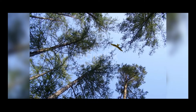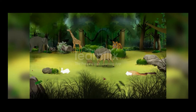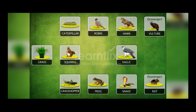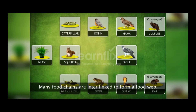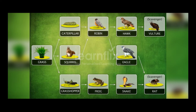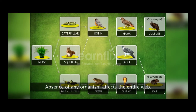Since a forest is home to a variety of organisms, many food chains coexist in it. Several food chains in a forest are interlinked to form a food web. In a food web too, all organisms are closely related and the absence of any one member affects the entire web.